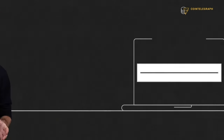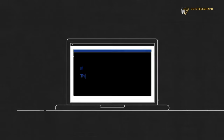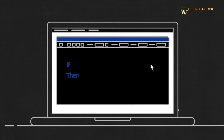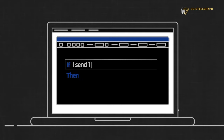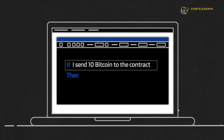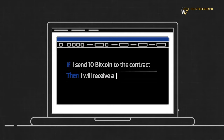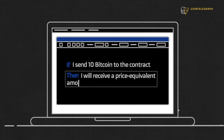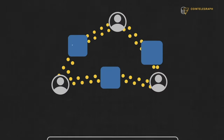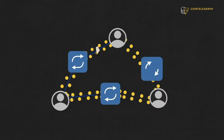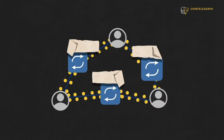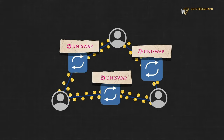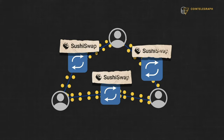You can think of smart contracts as digital if-then statements. To reword my earlier example, if I send 10 Bitcoin to the contract, then I will receive a price equivalent amount of ETH. This is essentially how decentralized exchanges work, like Uniswap or SushiSwap.